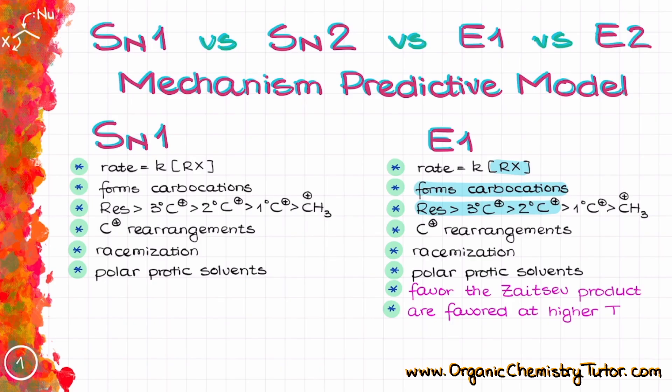Like in the case of SN1, we are expecting carbocation rearrangements when possible and racemization, and like SN1 reactions they also like polar protic solvents. The difference here is that typically E1 reactions are favored at higher temperatures than the SN1 reactions, and also E1 reactions favor the formation of the more substituted double bond, which is known as Zaitsev product.